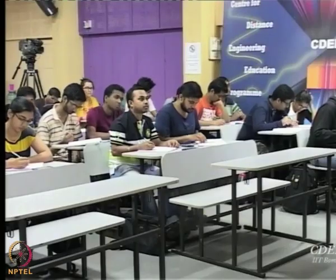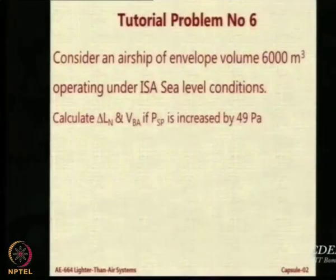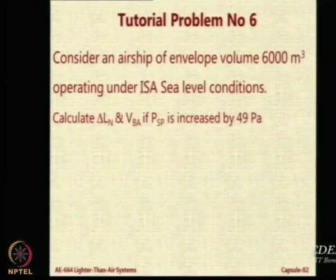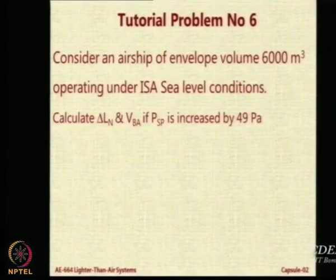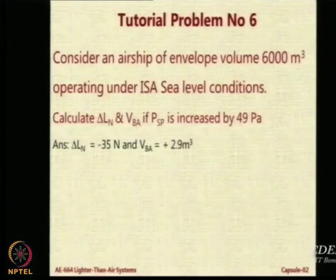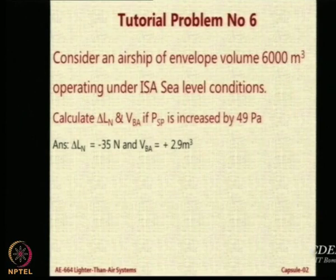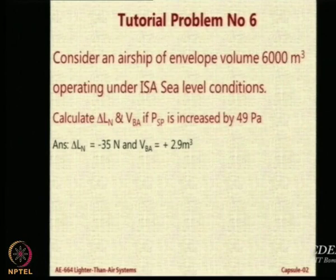Now at sea level we have pressure as 101325 and you increase it by 49 because of superpressure. The answer you get is 4.87×10⁻³⁵ newtons and you get 2.9 meter cubes by finding the volume of the weight and then using the density.